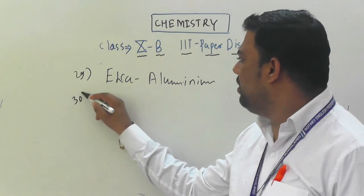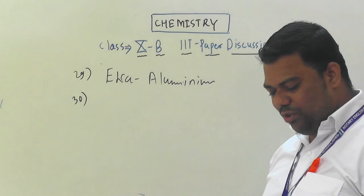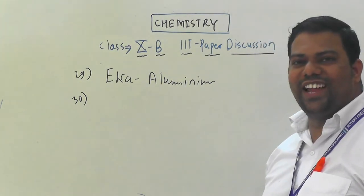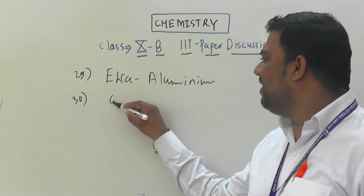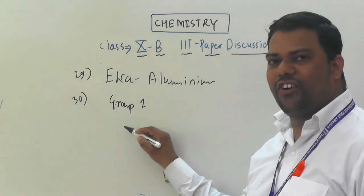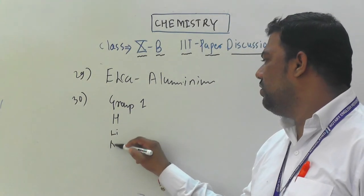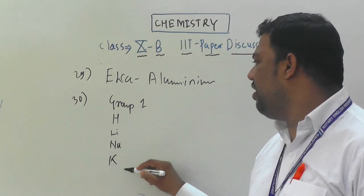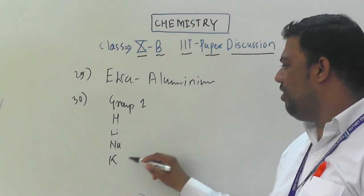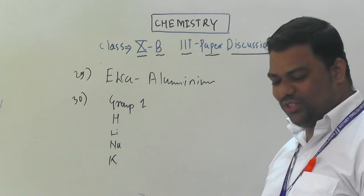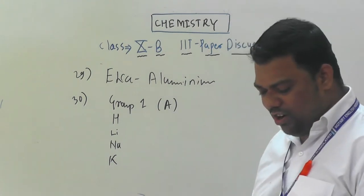Question number 30: elements of the same group have the same number of valence electrons. If you consider Group 1 — hydrogen, lithium, sodium, potassium — all have one valence electron: H is 1; Li is 2,1; Na is 2,8,1; K is 2,8,8,1. All have the same valence electrons. So option A is correct for question 30.